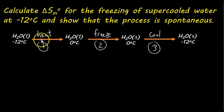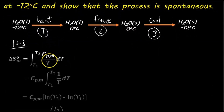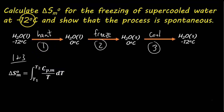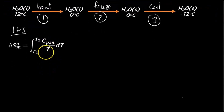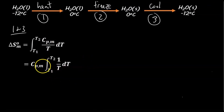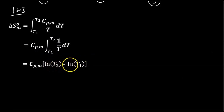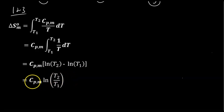For steps one and three — heating and cooling — we use the equation: the change in molar entropy equals the integral of the heat capacity divided by temperature, dT, from initial to final temperature. Since it's only a 12-degree temperature change and we're not given additional heat capacity data, we assume Cp is constant, pull it out of the integral, and integrate 1/T to get ln. So the result is Cp times ln(T₂/T₁).